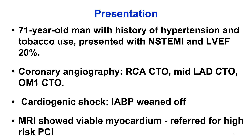The patient was an elderly man who presented with non-ST elevation myocardial infarction and hypotension. He had an ejection fraction of 20%, and angiography showed CTO of all three coronary vessels. He received an intra-aortic balloon pump that was subsequently weaned off, and underwent MRI that showed viable myocardium in all territories. He was therefore referred for high-risk complex PCI after being turned down for coronary bypass graft surgery.